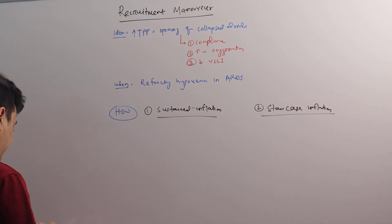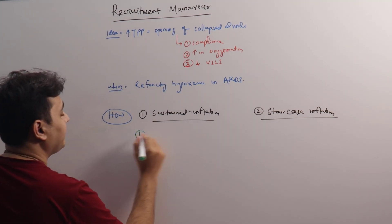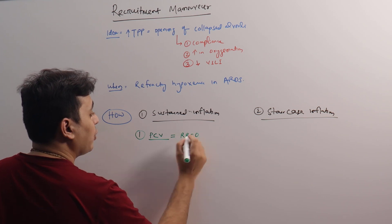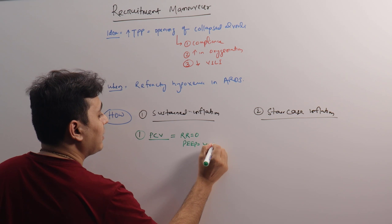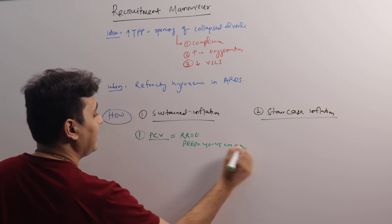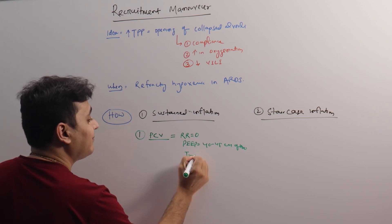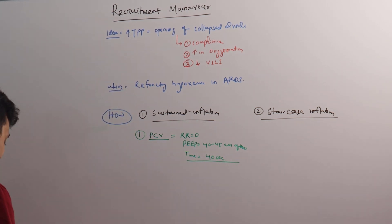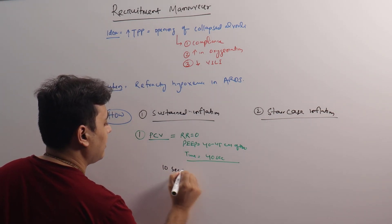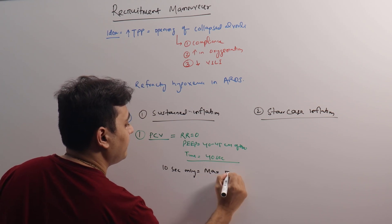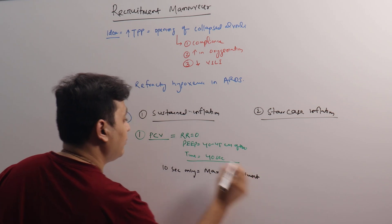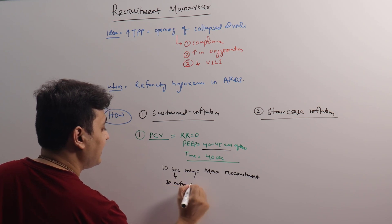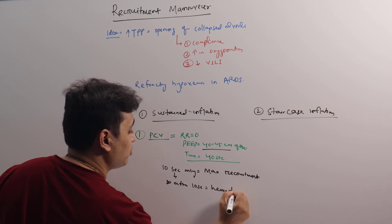In sustained inflation, there are different techniques. Number one: in pressure control ventilation, put the PEEP at zero, put the PIP at around 40 to 45 centimeters of water, and keep it for approximately 40 seconds. In the first 10 seconds, you will find maximum recruitment, but later there will be hemodynamic instability, so we have to be very careful.